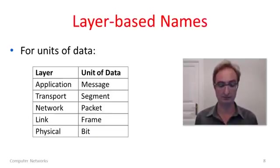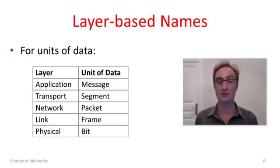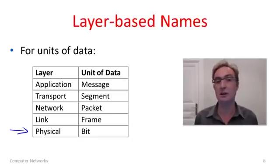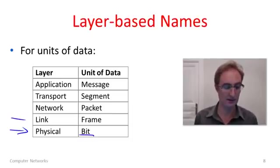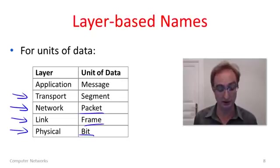Now you know a lot about standards. To finish out this unit, I want to talk about something else we get from reference models. The structure of reference models gives us names and terminology to talk about networks. A lot of the names we use to describe units of data take their names from the layering. At the physical layer we're talking about bits. At the link layer, we'll often be talking about frames. The network layer is where packets exist. And at the transport layer, a unit of information is actually called a segment. There's a generic term for applications and everything above — that's message.